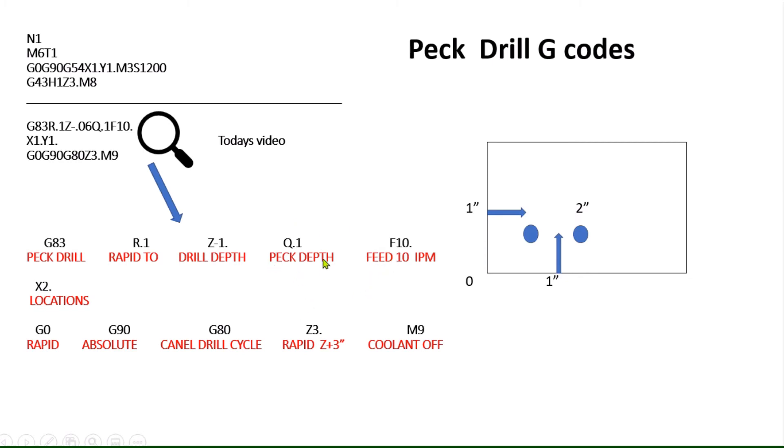However, we do have a Q here now. A Q is one we did not have. We had three variables in the G81. The G83 requires a Q, which is just like it says, it's pecking. So when you're pecking down, it will peck 100 thousandths, 200 thousandths, 300 thousandths, and it'll retract back up to the R value. And that'll allow the chip to break, and the coolant to come in, and your head will go up and down, taking 100 more thousandths until it completes its final one inch below the surface at that feed rate.